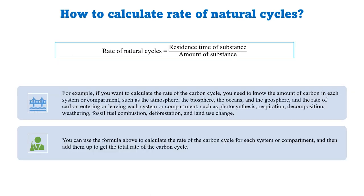The rate of natural cycles can be calculated by dividing the amount of substance by the residence time of that substance. For example, to calculate the rate of the carbon cycle, we need to know the amount of carbon in each component — such as the atmosphere, biosphere, oceans, and geosphere — and the rate at which carbon dioxide is entering, for example through photosynthesis, or leaving through respiration, decomposition, weathering, and fossil fuel burning.